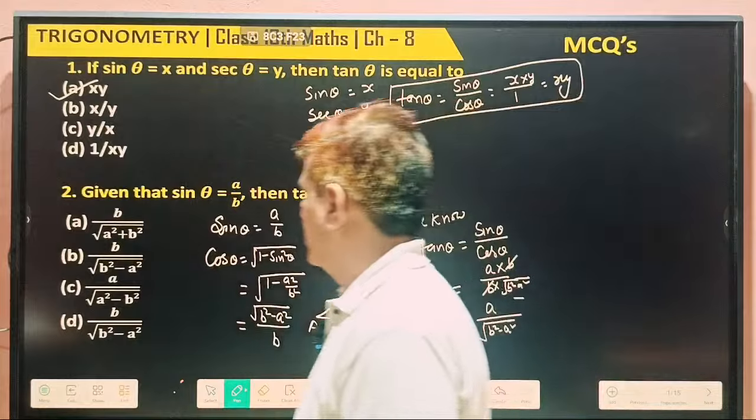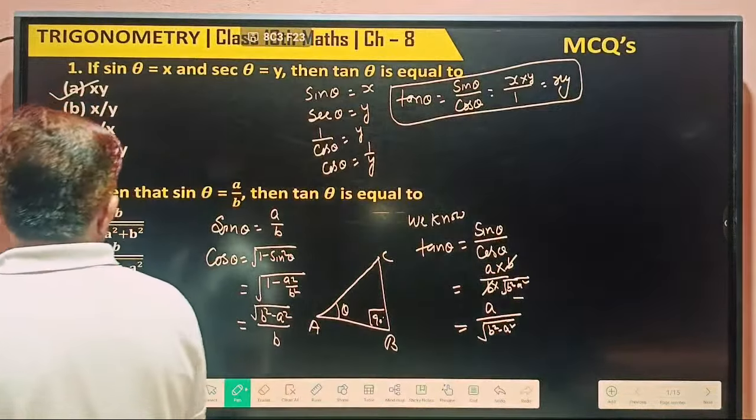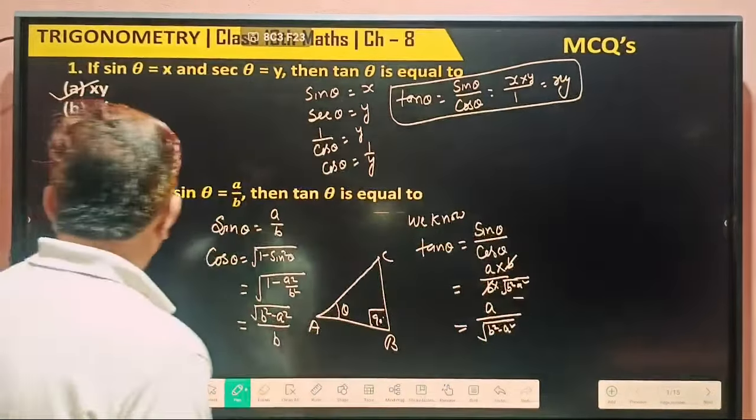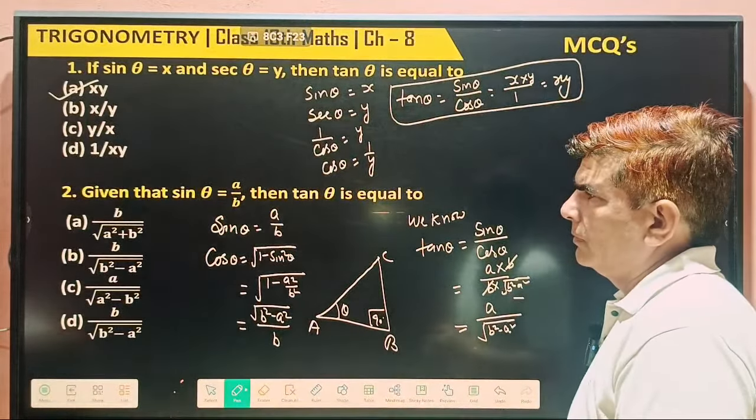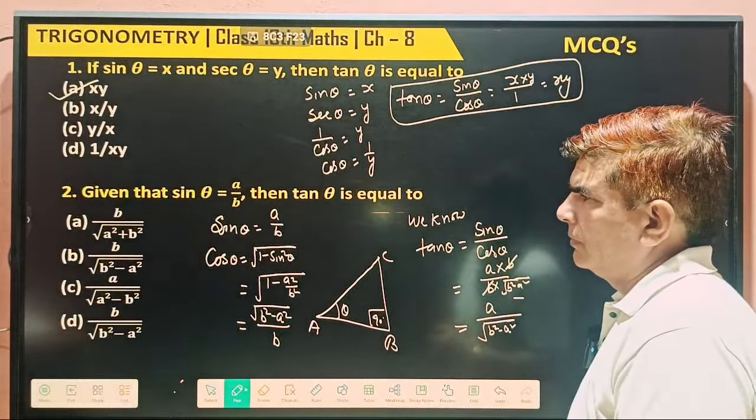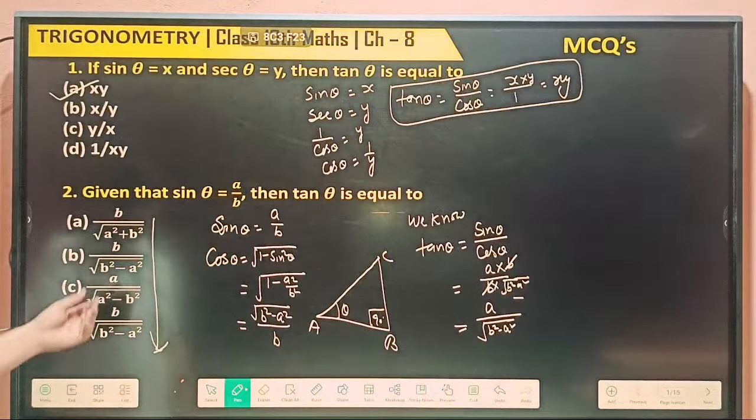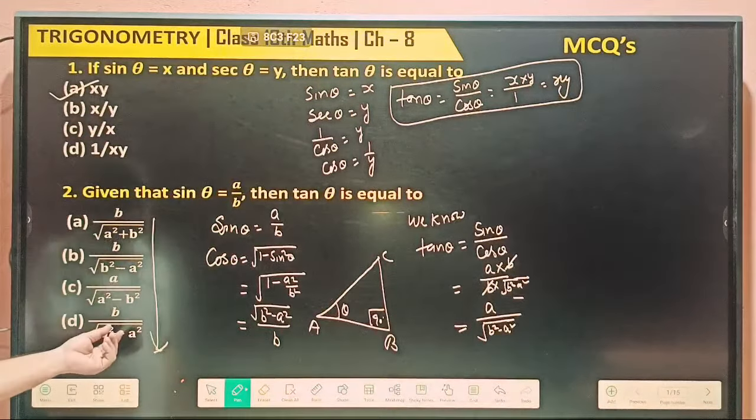Which one is our answer? According to this, no one is our answer. From this, so which one is your answer? Option A: a by a square plus b square given. So here what's coming? Look one time. Here is a mistake in this answer.